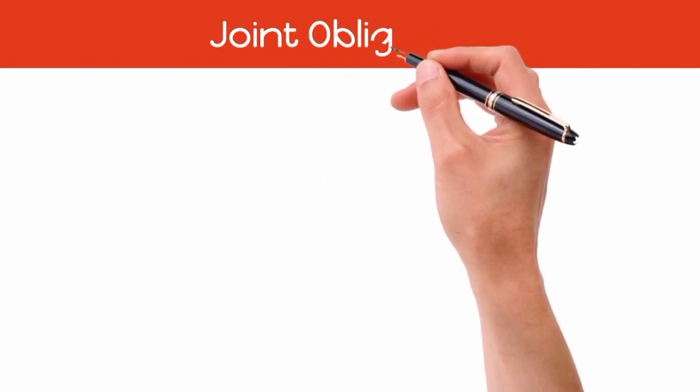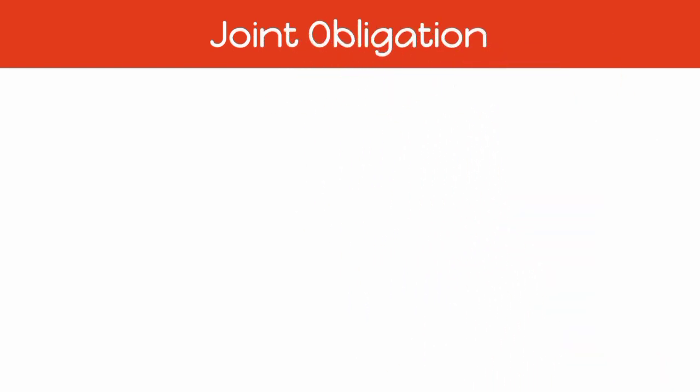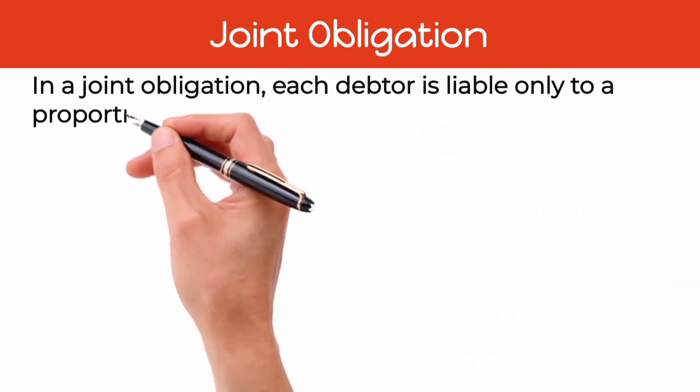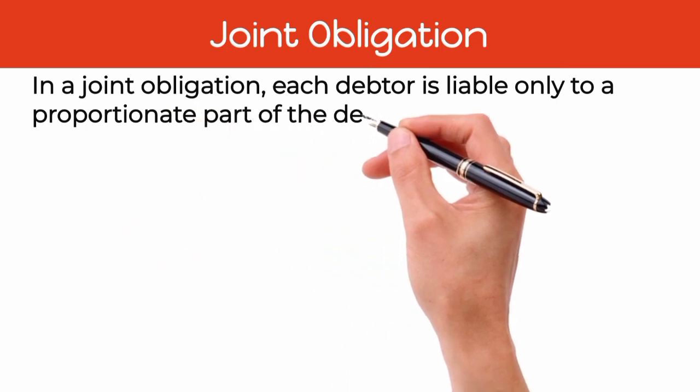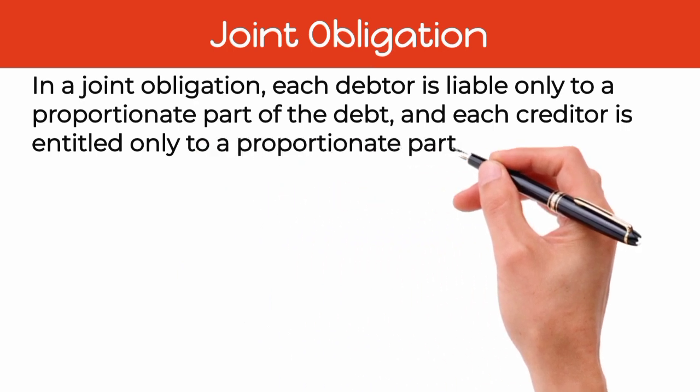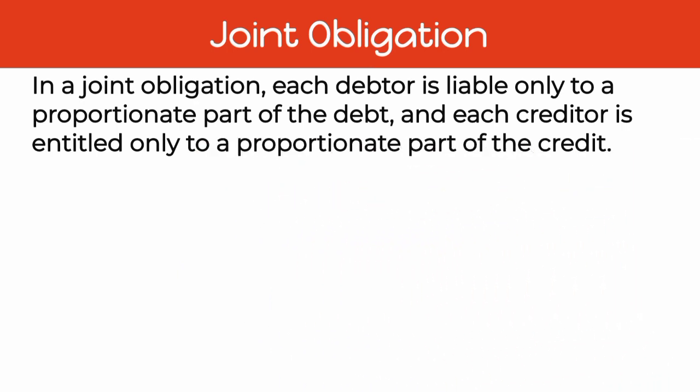Now, let's discuss Joint Obligation and Solidary Obligation separately. In a Joint Obligation, each debtor is liable only to a proportionate part of the debt, and each creditor is entitled only to a proportionate part of the credit. Ang debt, utang. Ang credit, pautang.